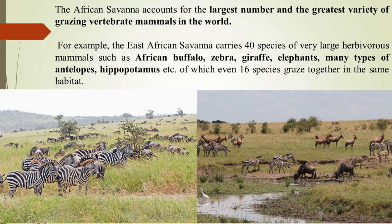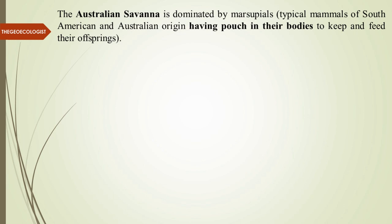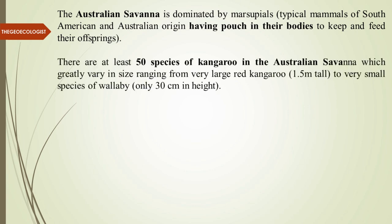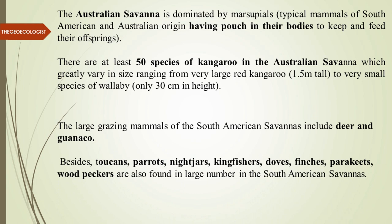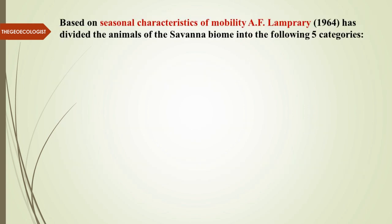East African Savannah herbivore mammals include African buffalo, zebra, giraffe, elephants, many types of antelopes, and hippopotamus. The Australian Savannah is dominated by marsupials — typical pouched mammals — with 50 species of kangaroo found there. Large grazing mammals of South American Savannahs include deer and guanaco. Many varieties of birds are also found in Savannahs, including toucans, parrots, nightjars, kingfishers, doves, finches, parakeets, and woodpeckers.